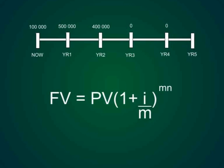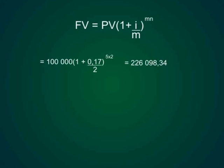Let us start with 100,000 Rand. Then it will be 100,000 Rand open bracket 1 plus 0.17 over 2 close bracket to the power 5 times 2 which gives us an answer of 226,098 Rand and 34 cents. That is the future value of the 100,000 Rand that he invested today.